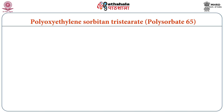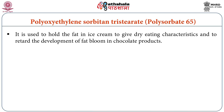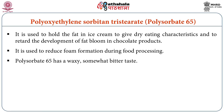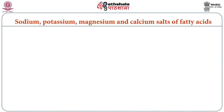Another ingredient is polyoxyethylene sorbitan tristearate, generally known as polysorbate 65. It is used to hold fat in ice cream to give dry eating characteristics and to retard the development of fat bloom in chocolate products. Fat bloom is one of the most common defects in the chocolate industry. It is also used to reduce foam formation during food processing. Polysorbate 65 has a waxy and somewhat bitter taste. Typical applications include ice cream and frozen desserts, sugar confectioneries, cakes and cake mixes, coffee whiteners, and whipped cream based on dairy and vegetable fat.